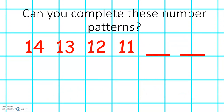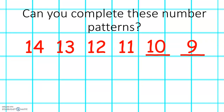Let's think about this number pattern. We have 14, 13, 12, 11. What will the next two numbers be? Excellent. It will be 10 and 9. In this number pattern, the numbers are getting one less each time.